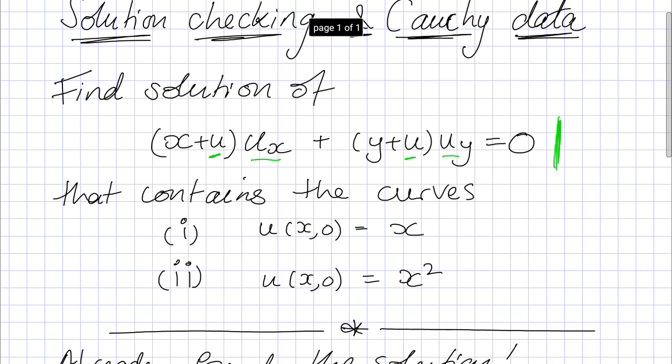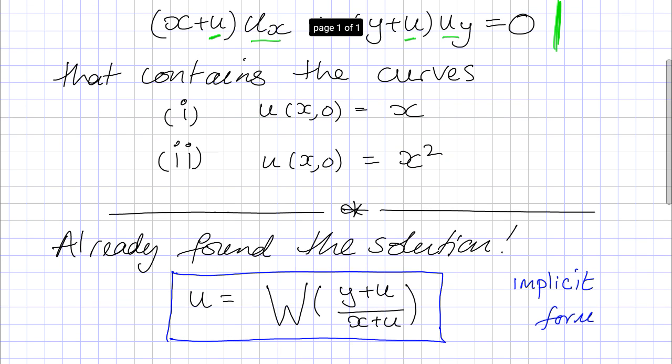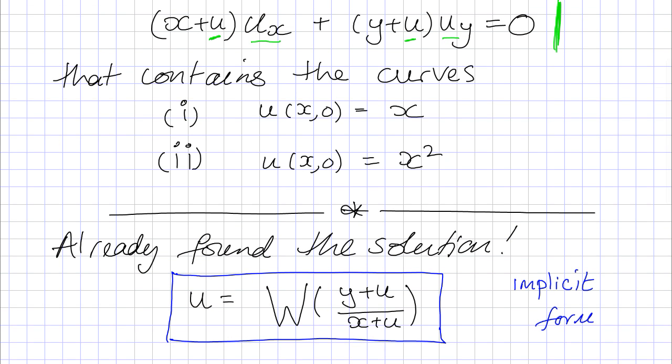In the lectures we actually found the general solution of this PDE — I'm not going to go through how to do that here, but this is the solution in the blue box. So u is equal to some arbitrary function w of (y + u) divided by (x + u). Because this is a quasi-linear PDE, this general solution is in implicit form — we've got u on both the left and the right hand side.